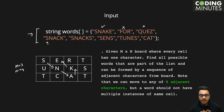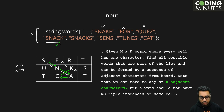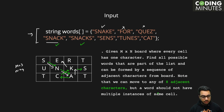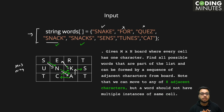Can we form 'quez'? No, we don't have 'q'. Can we form 'snack'? Yes — from S we go to N, then A, then C, then K. And 'snacks' can also be formed — from K we can go to S. The rule is a word should not have multiple instances of the same cell, so we're ensuring we don't return to the same cell within the same word.